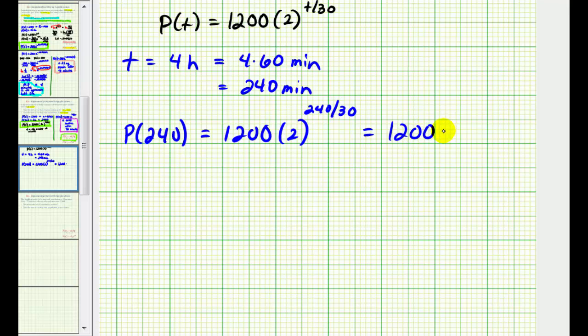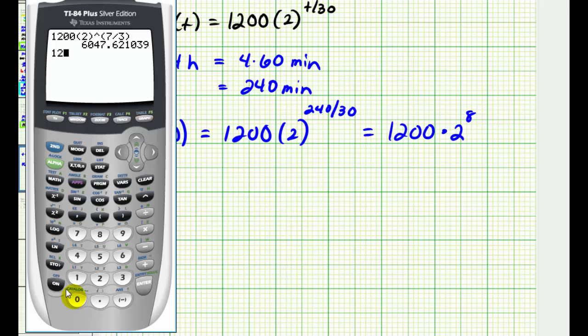So we have 1,200 times two to the eighth power. So there'll be 307,200 bacteria after four hours.